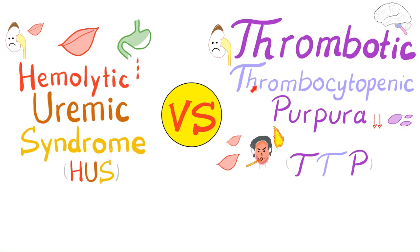Hey, it's Medicosis Perfectionitis, where medicine makes perfect sense. Let's continue our bleeding and coagulation playlist. Today we'll compare between hemolytic uremic syndrome and thrombotic thrombocytopenic purpura. With that said, let's get started.